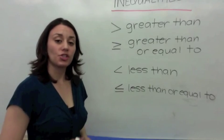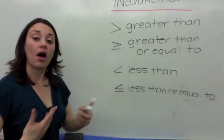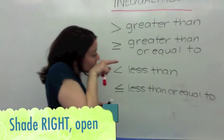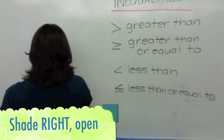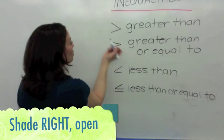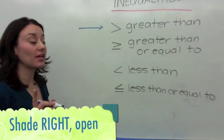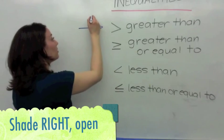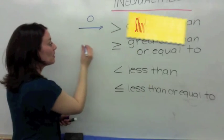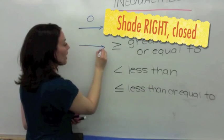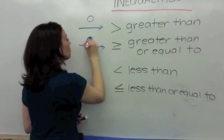Let's review. When you see the greater than symbol, on a number line you shade everything pointing to the right, and the circle is open because it does not include the number. Greater than or equal to means shade everything to the right, but the circle is splat closed because it's also equal to that number.